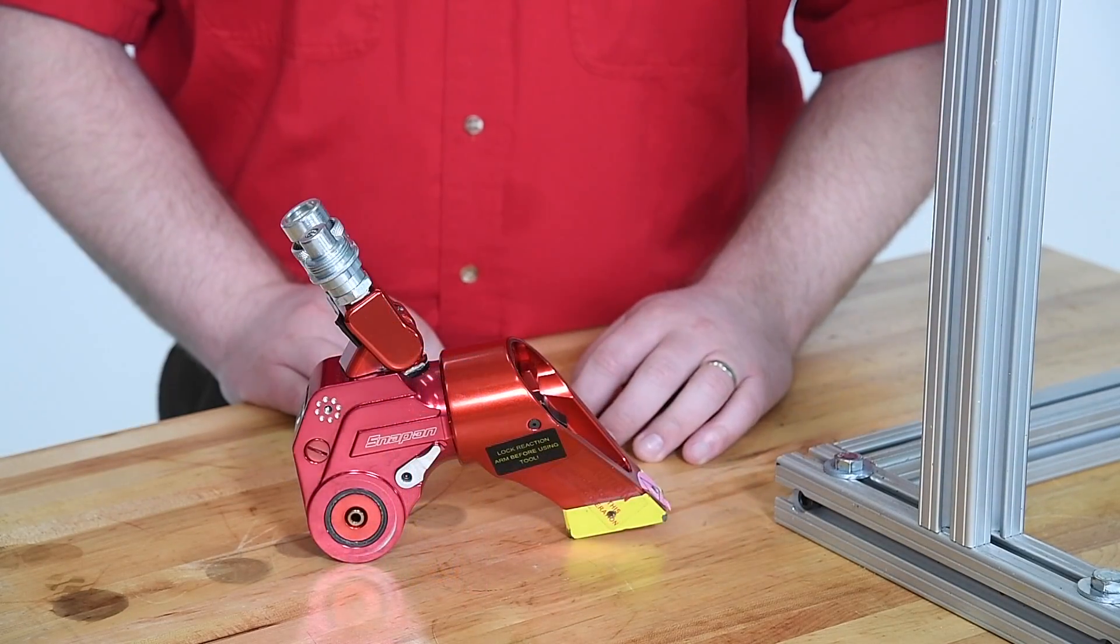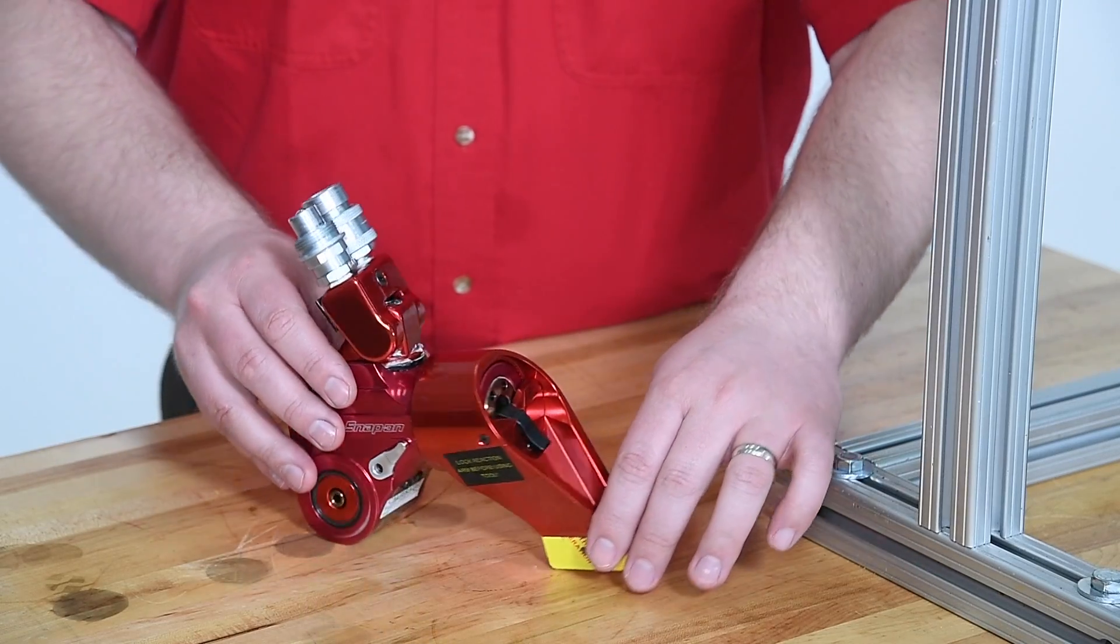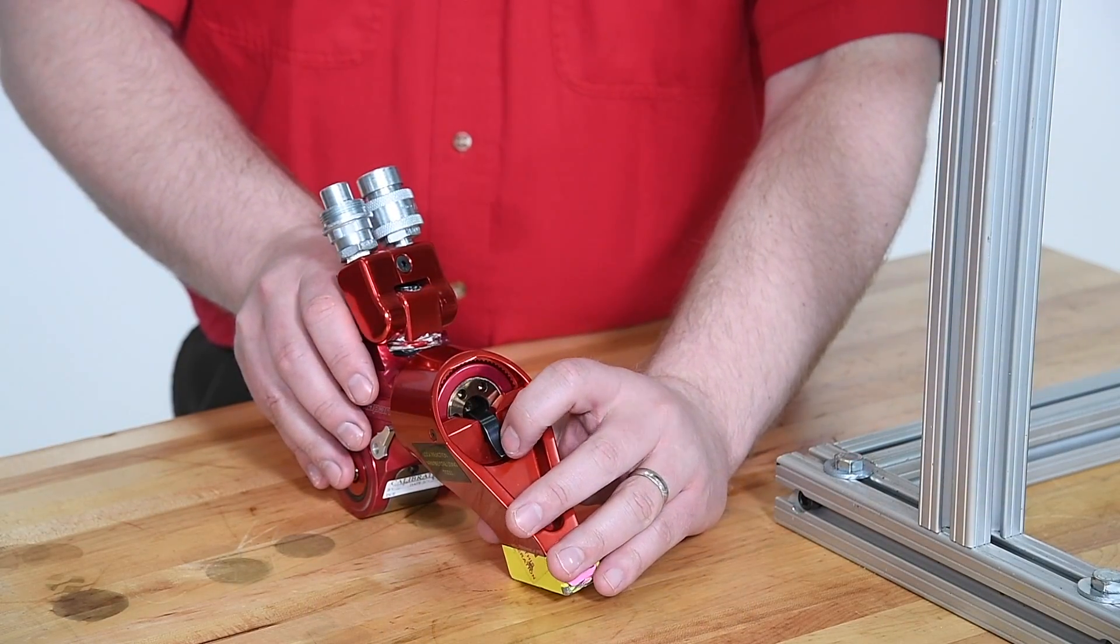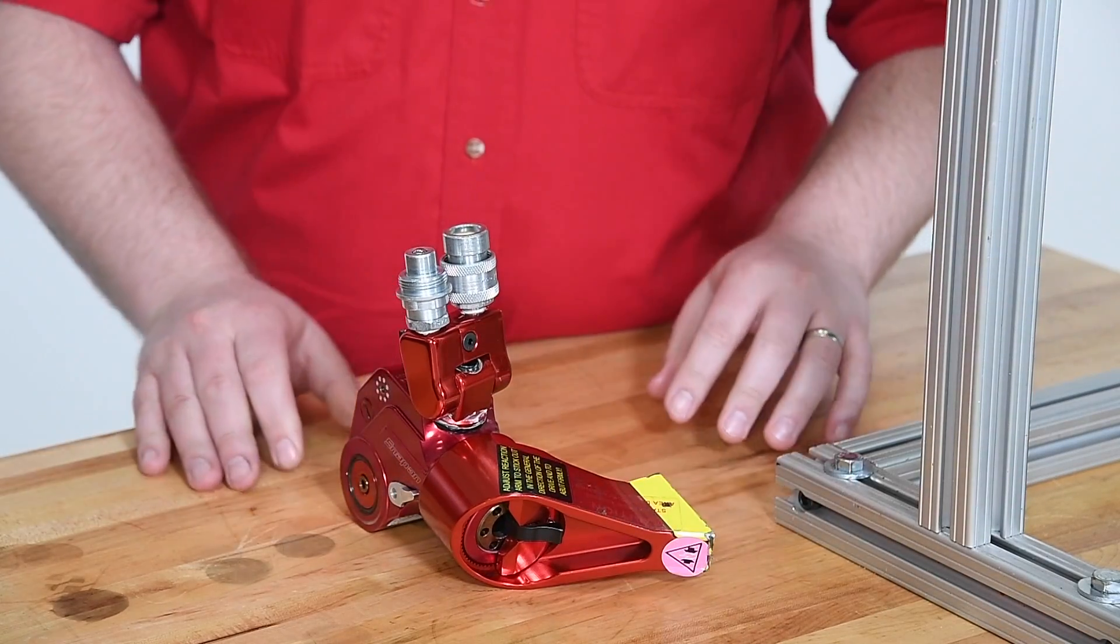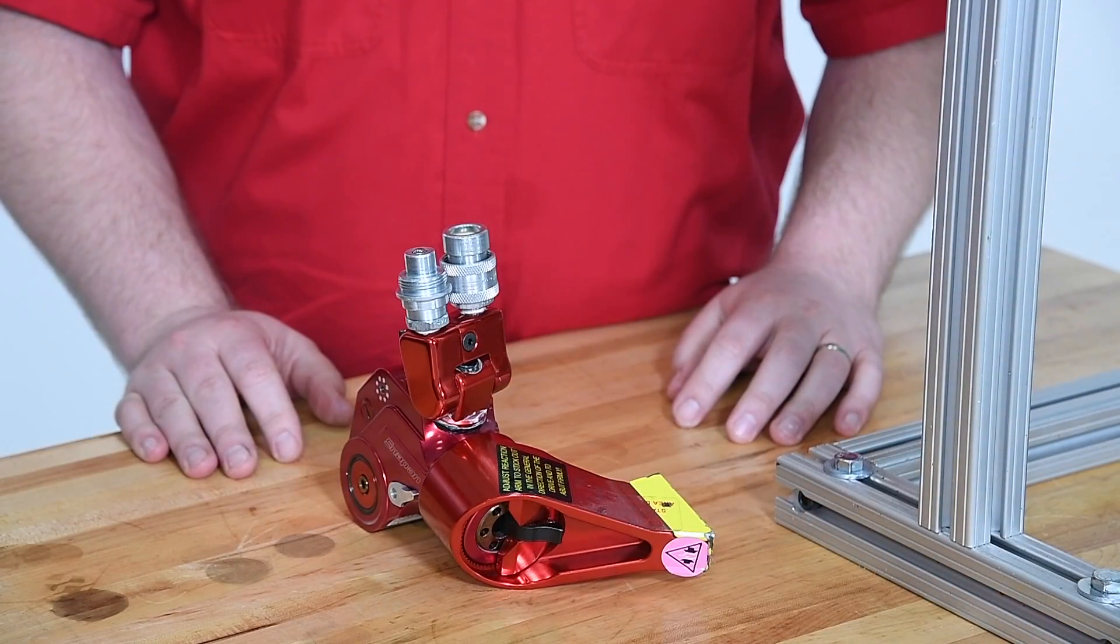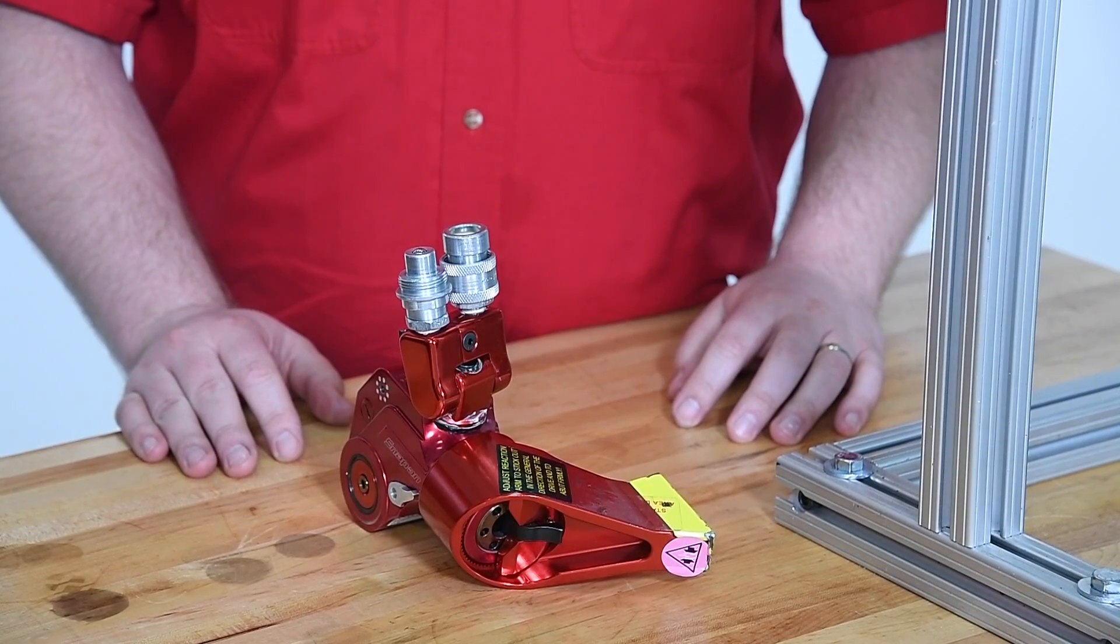The reaction arm is used to keep the wrench from turning during operation. To adjust the reaction arm as needed, simply press the release lever, remove and reposition. Reaction arms suitable for a wide variety of applications are also available.